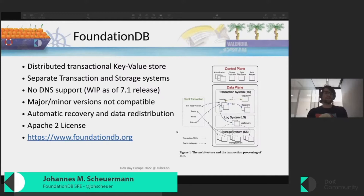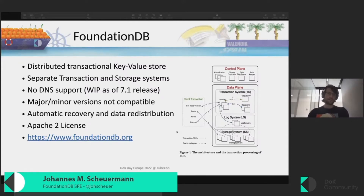As of the 7.1 release there is only limited DNS support, and the idea is to have DNS support for the connection string. That's something that's a little bit tricky in a Kubernetes environment where pods can get rescheduled, recreated, and get new pod IPs. Another important fact is that most major and minor versions are not compatible, which means you have to upgrade all processes at the same time; otherwise they may not be able to communicate together.